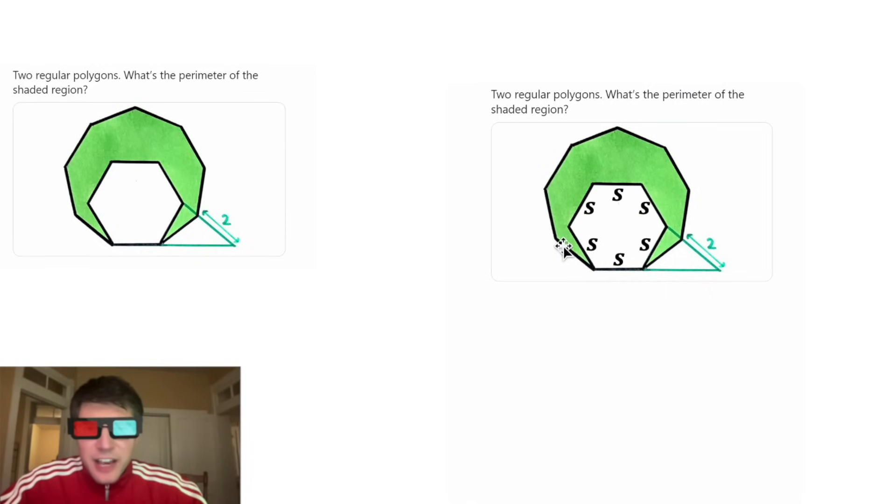And then since this is a side of the regular nonagon, all of these will be equal to S. So our perimeter is gonna be equal to 1, 2, 3, 4, 5, 6, 7, 8, 9, 10, 11, 12, 13 S's.